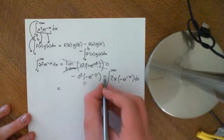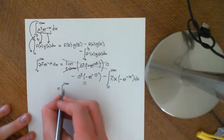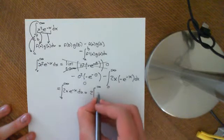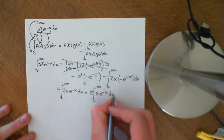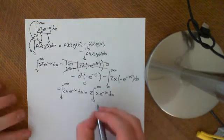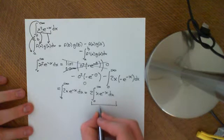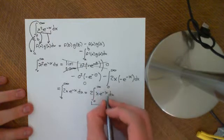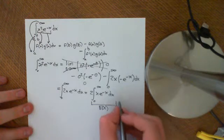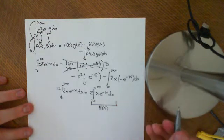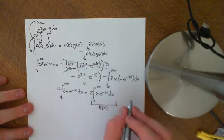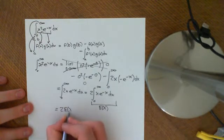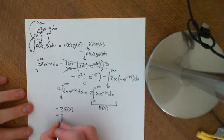Pulling out the negative, this becomes the integral from 0 to infinity of 2x e to the negative x dx, which equals 2 times the integral from 0 to infinity of x e to the negative x dx. That integral is exactly the expected value of the standard exponential distribution — it's x times the PDF on 0 to infinity — so this equals 2 times E[x].